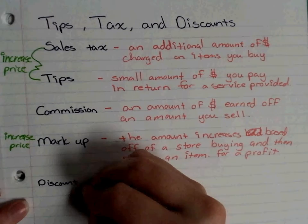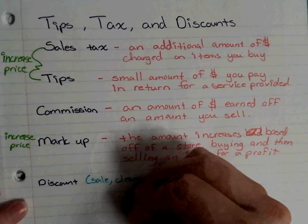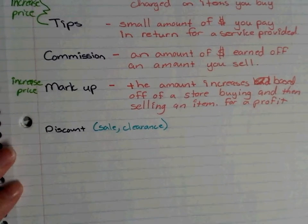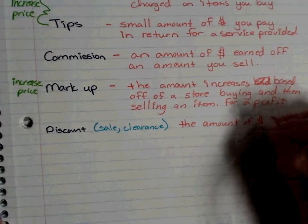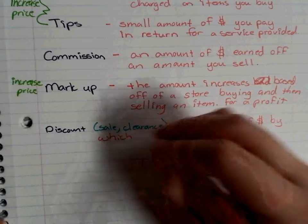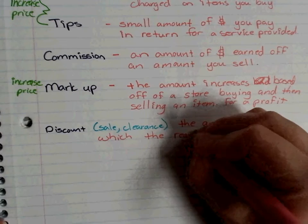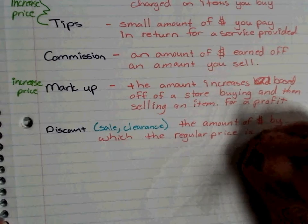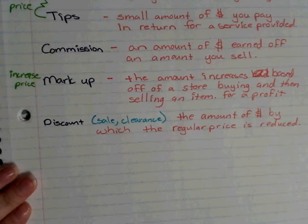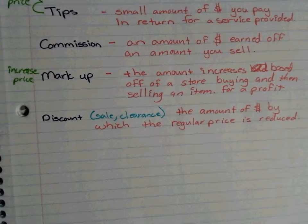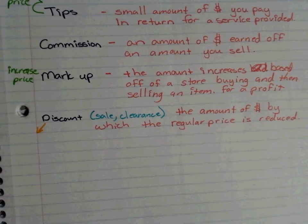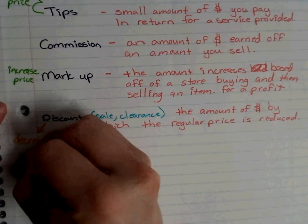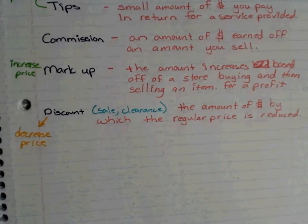The last concept is discount — you know it as a sale or clearance. That's the amount of money by which the regular price is reduced. For example, if it's winter and I have summer gear left, I'll put it on sale for a cheaper price than the original. Discount is the only concept that decreases the price.